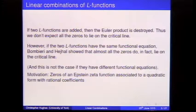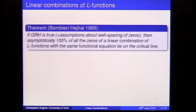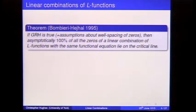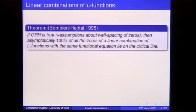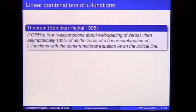They showed 100% of zeros lie on the critical line — but you assume GRH, and you also need to assume something about the zeros not clustering too much. That ruins their proof if zeros clump together. Here is their 1995 statement: take L-functions with the same functional equation — that is crucial — make a linear combination of them, and 100% of the zeros asymptotically lie on the critical line under GRH.